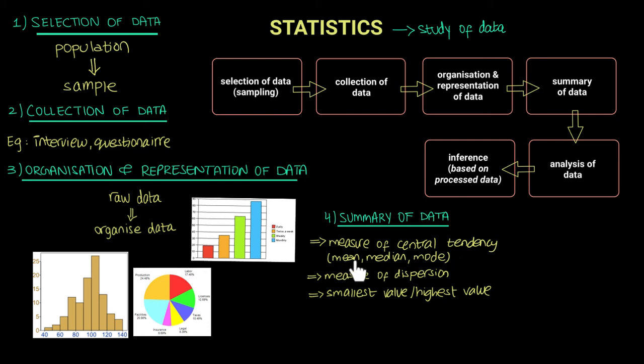For example, central tendency is calculating the mean, median, and mode of a data. These are all measures of central tendency. The meaning of each of these terms, as well as how to find out these values will be discussed in the further videos. Measure of dispersion will also be discussed, and how to find out the smallest and highest value. Well, the meaning is obvious: you're just looking at the highest value of your data and the smallest value, just so that you get an idea of the range of values of your data. This is basically the summary of data.